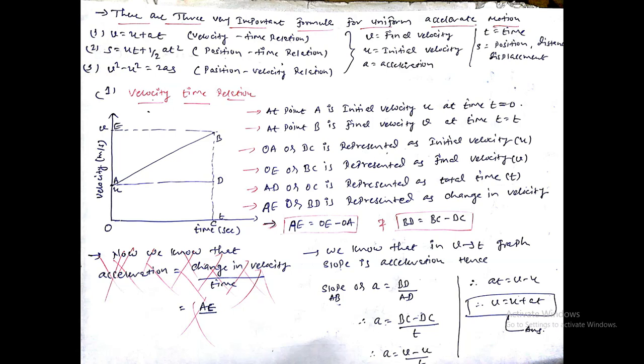The homework is first that you have to write all three formulas five times. What are these formulas? v = u + at, which is also called velocity-time relation. s = ut + 1/2 at², which is also called position-time relation. v² - u² = 2as, which is also called position-velocity relation. In all three formulas, each term is: v is final velocity, u is initial velocity, a is acceleration, t is time, s is position, distance, displacement, or total distance covered.